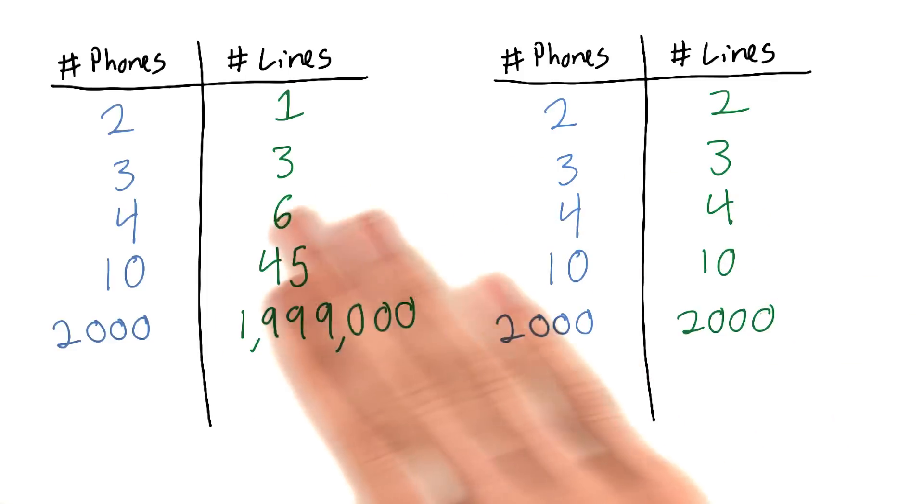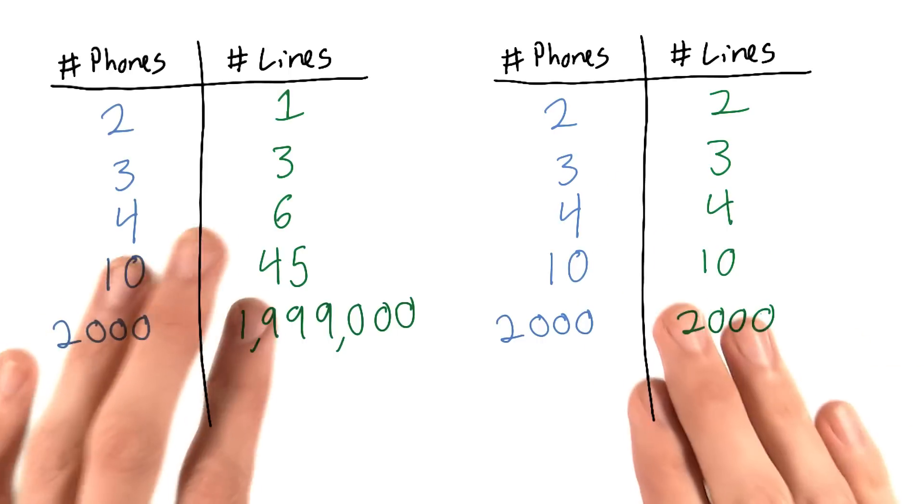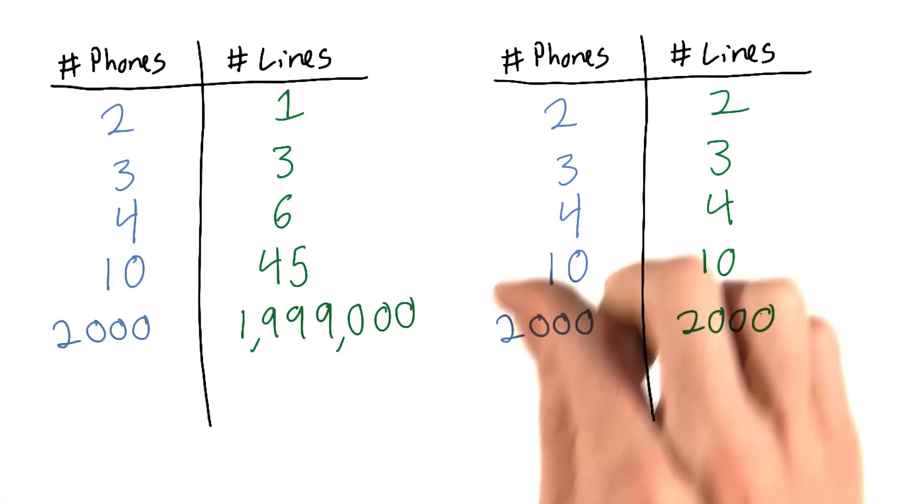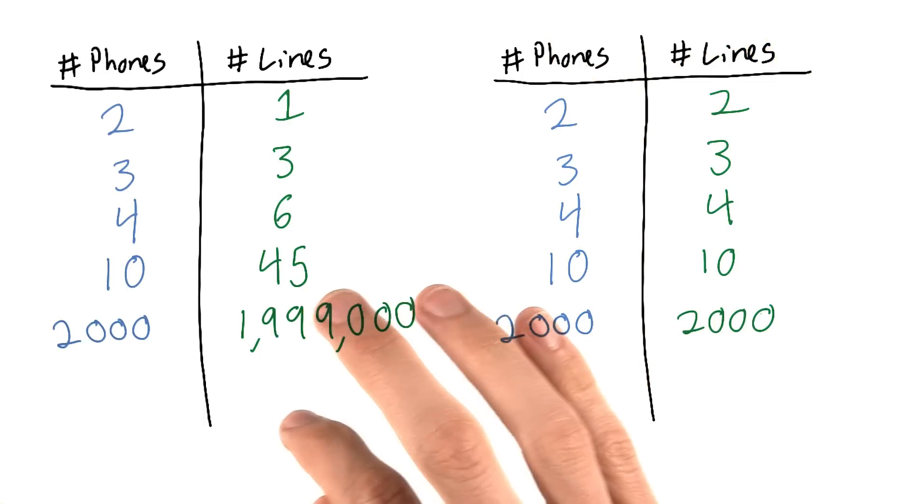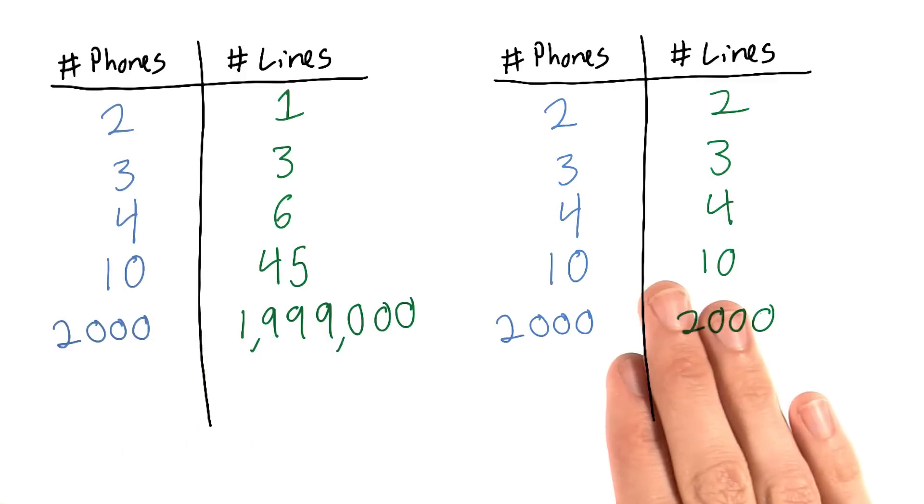But generally speaking, this shows you that connections are complexity. If you saw these two things on a graph, this one would go kind of like that. This one would linearly increase. So now we know that we should minimize our connections. It turns out software development is very similar. So let's take a look at that.